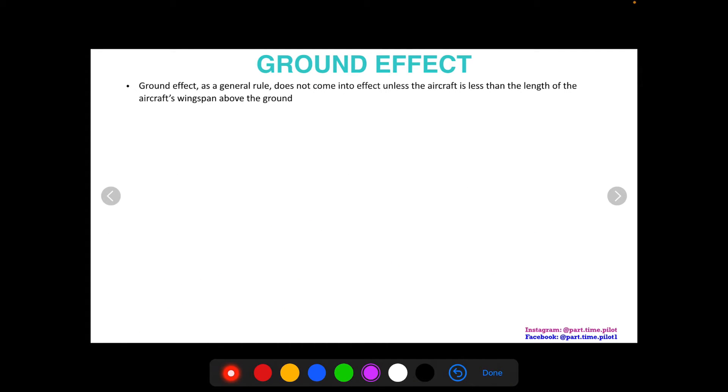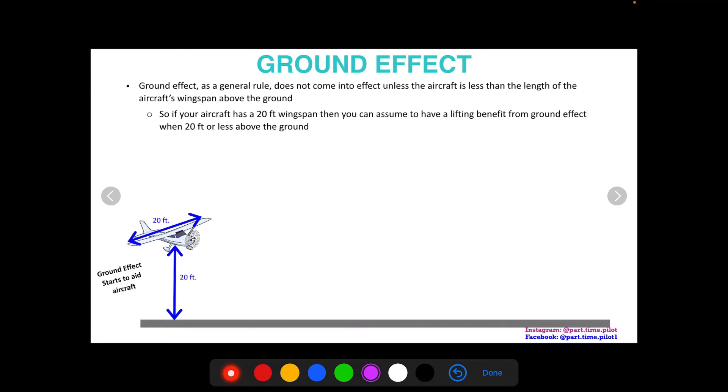Ground effect, as a general rule, does not come into effect unless the aircraft is less than a length of the aircraft's wingspan above the ground. So what does that mean? If your aircraft has a wingspan of 20 feet, then you can assume to have a lifting benefit from ground effect when 20 feet or less above the ground.